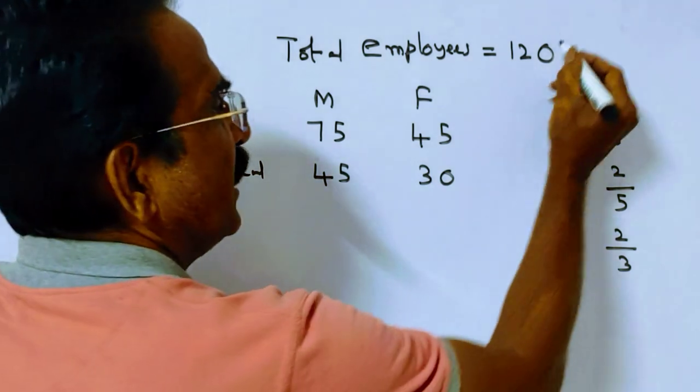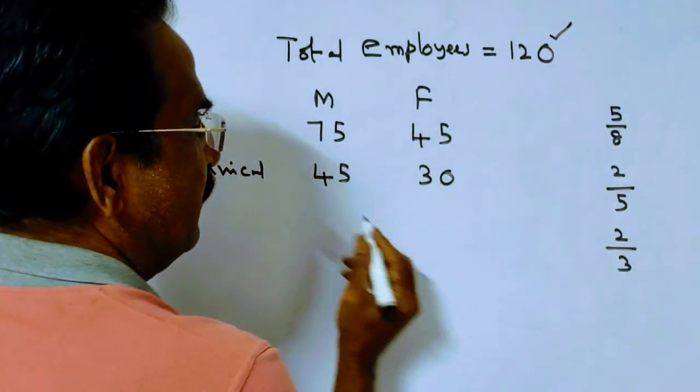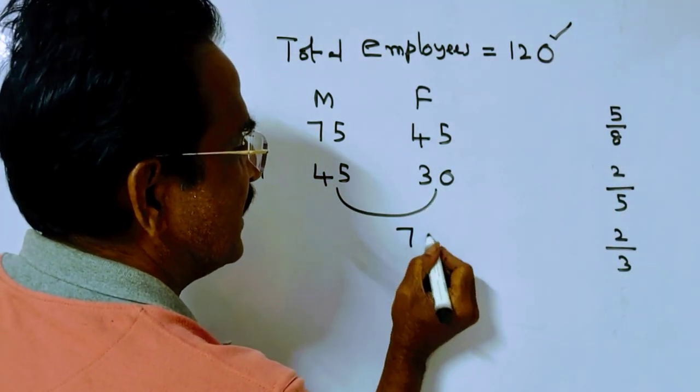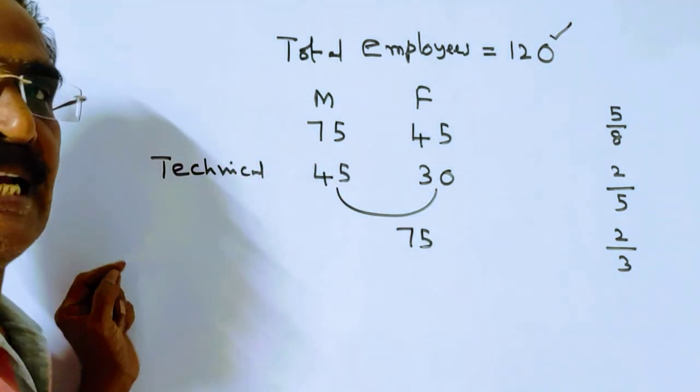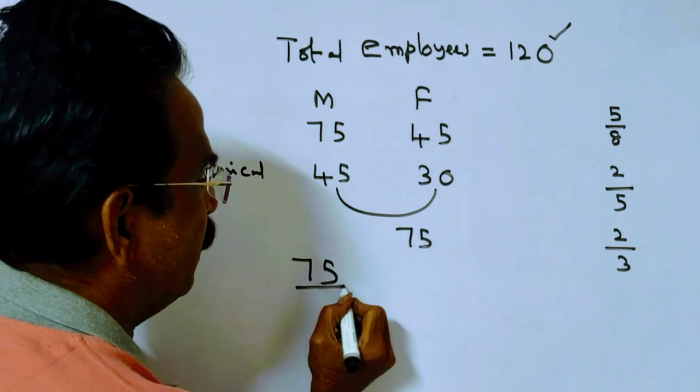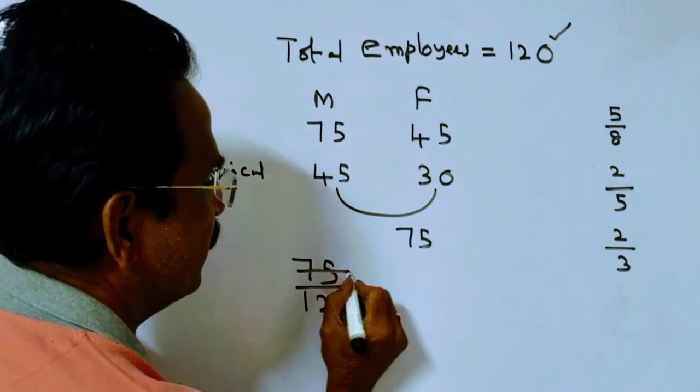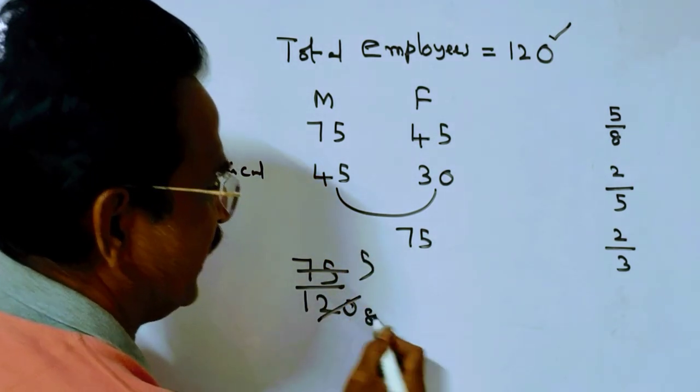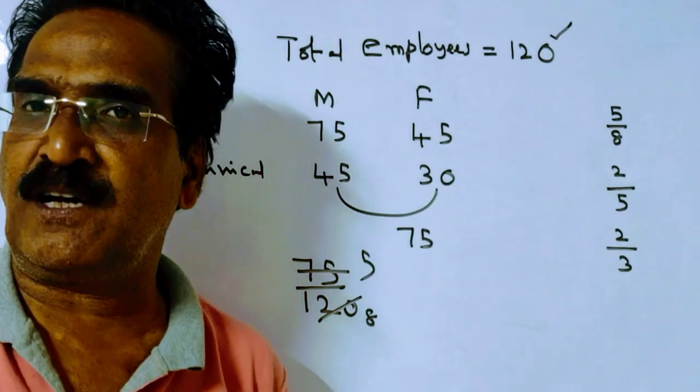So friends, the total number of employees is 120, of which total technical is 75. So technical is what fraction of the total employees? 75 upon 120 simplifies to 5 by 8. 5 by 8 is your answer, friends.